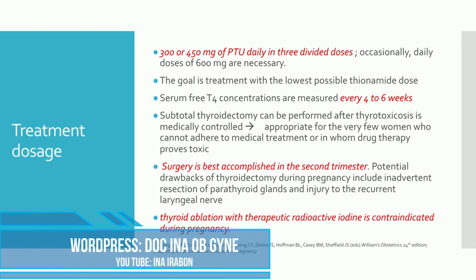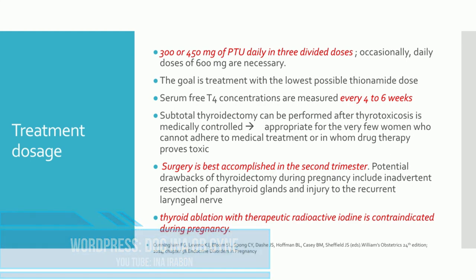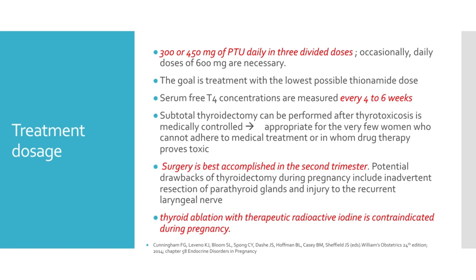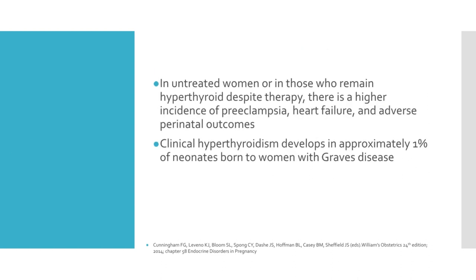Subtotal thyroidectomy can be performed after thyrotoxicosis is medically controlled. This seldom is done during pregnancy but may be appropriate for the very few women who cannot adhere to medical treatment or in whom drug therapy proves toxic. Surgery is best accomplished in the second trimester. Potential drawbacks of thyroidectomy during pregnancy include inadvertent resection of parathyroid glands and injury to the recurrent laryngeal nerve. Thyroid ablation with therapeutic radioactive iodine is contraindicated during pregnancy. In untreated women or in those who remain hyperthyroid despite therapy, there is a higher incidence of preeclampsia, heart failure, and adverse perinatal outcomes.